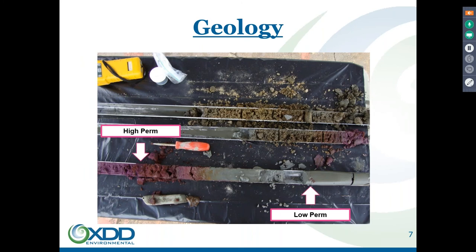I want to show you a couple of examples to make it more interesting. This particular one is looking at an application of potassium permanganate — an oxidant which is very effective at destroying a lot of the chlorinated ethenes, though not very effective for chlorinated ethanes.